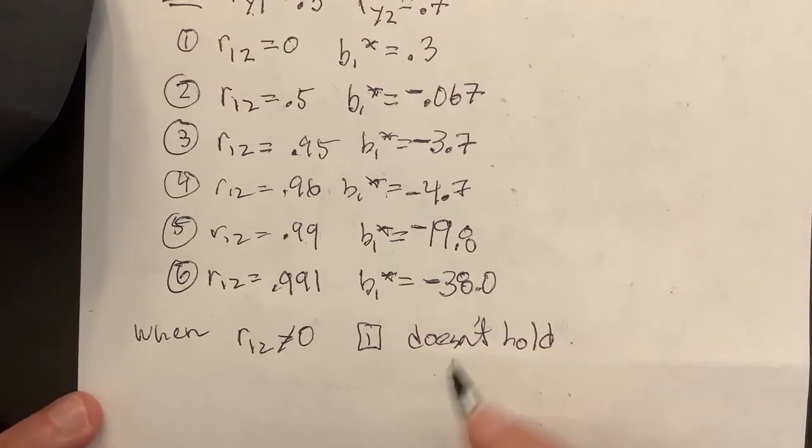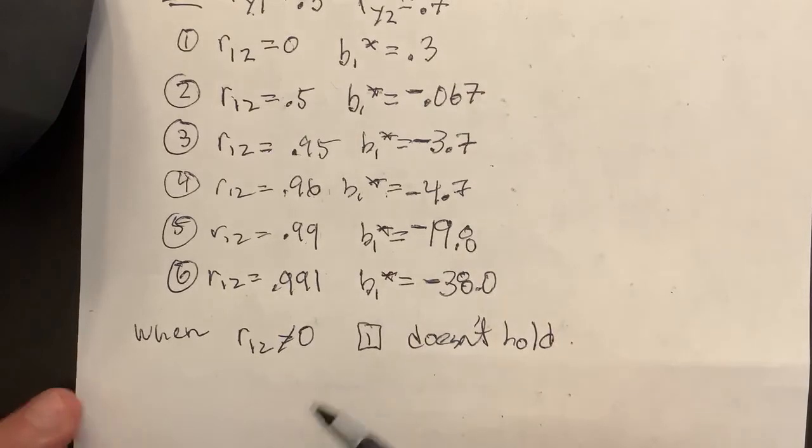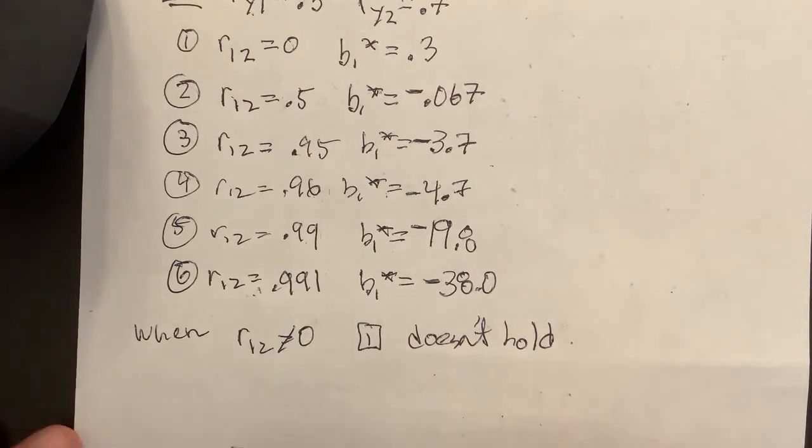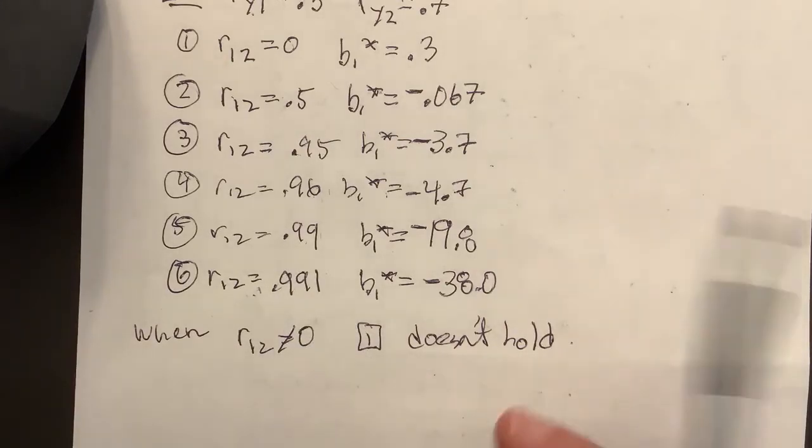And you should think of it, you can see things get worse the more they're correlated together. So you get it holds even less as R12 goes toward one, or minus one, if we went the other way.